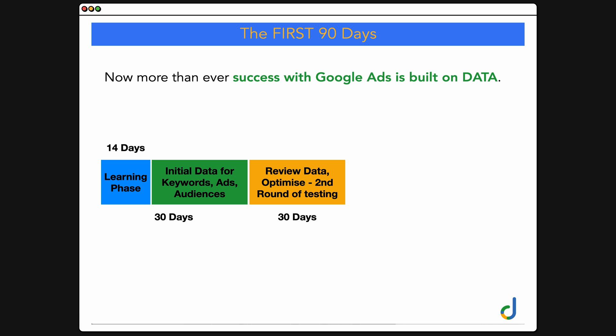From there, we review the data, add in the optimizations, and go into a second round of testing. We've already been reviewing keywords and adding negative keywords. But after 30 days is the earliest we can start a second round of testing around different ad copies. We'll have some initial audience data where we can potentially add some bid adjustments, though even that might be too early. The end of 30 days is really the first point where we can do split testing around our ad copies.